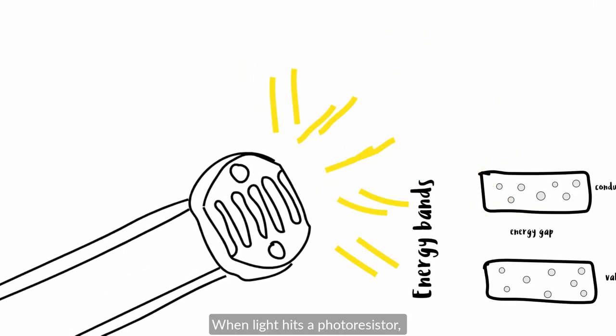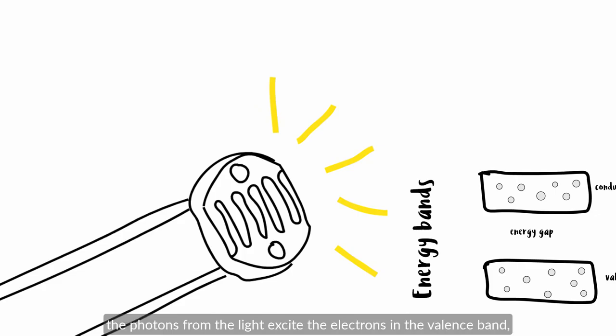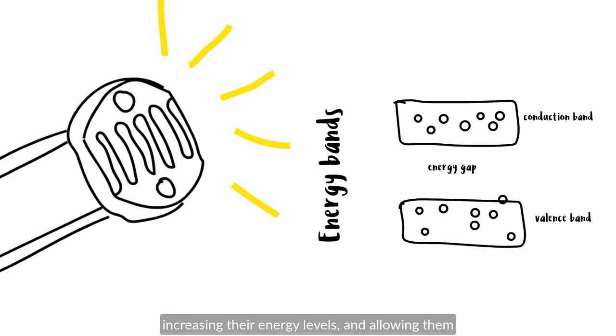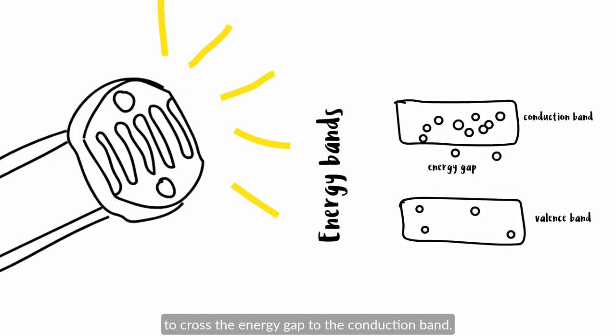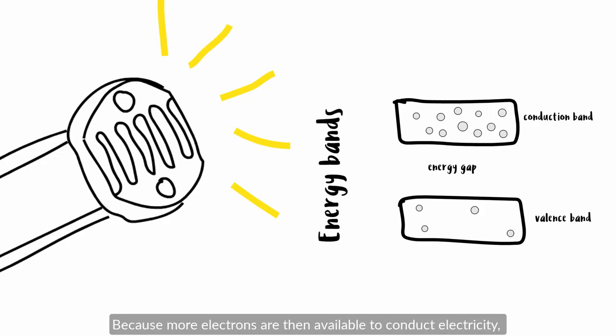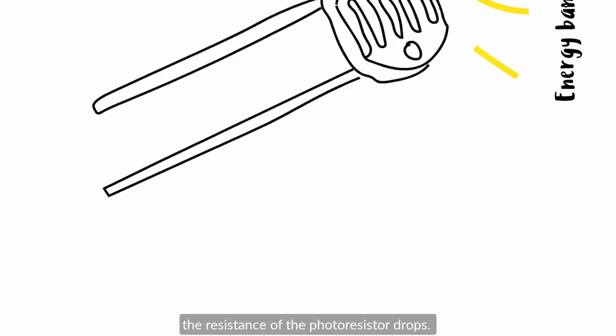When light hits a photoresistor, the photons from the light excite the electrons in the valence band, increasing their energy levels and allowing them to cross the energy gap to the conduction band. Because more electrons are then available to conduct electricity, the resistance of the photoresistor drops.